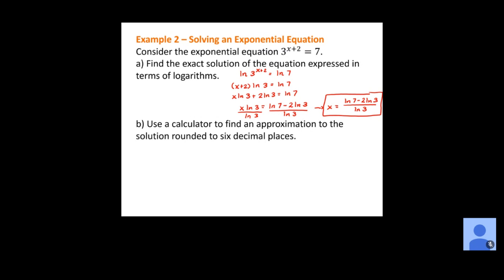Part B says to use a calculator to find the approximate value, rounded to six decimal places. Go to your calculator and compute natural log of 7 minus 2 natural log of 3, making sure you calculate all of that together first, then divide by the natural log of 3. That gives us x equals negative 0.228756. Just make sure you group the numerator together — do the subtraction first before dividing by the natural log of 3 on the bottom.